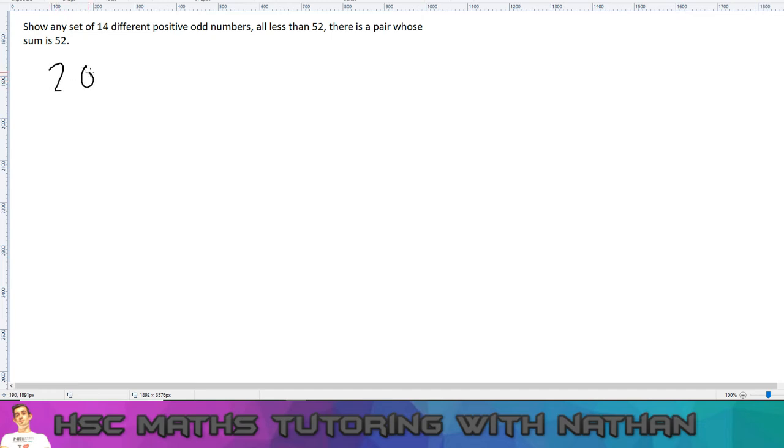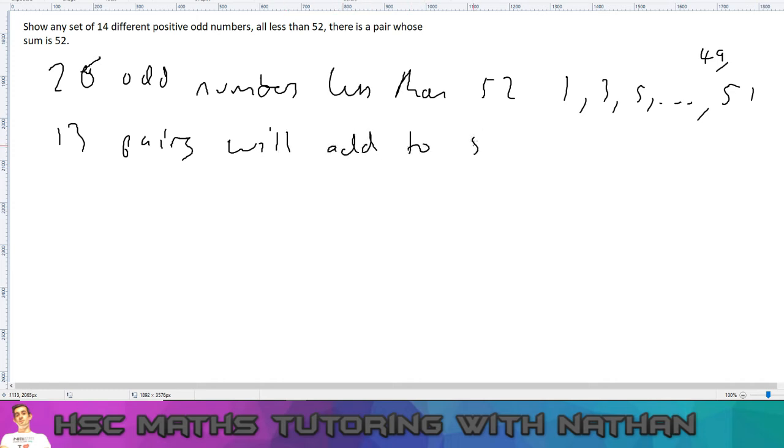So there are 26 odd numbers less than 52, right? You've got 1, 3, 5, dot dot dot, 51. So by symmetry, if you've got 52 numbers, half of them have to be odd, so that's 26. Now how many pairs will add to 52? We're going to think here, because that's what we want—we want the sum to be 52. So let's think: well, 1 and 51, and then that means if we put in here, 3 and 49. So you can see by symmetry it's the first and last, second and second last, and so on. So that means half of them—so then 13 pairs will add to 52. If you want here: 1, 51; 3, 49; and etc., all the way to the middle, 25 and 27.